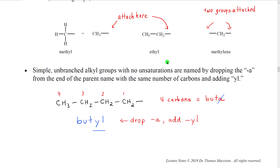To name simple unbranched carbon groups with no unsaturations, we name them by dropping the A from the end of the parent and then adding YL instead. So for example, this is a four-carbon substituent group. The parent would be buta, we drop the A, and we put YL, so this is butyl instead.